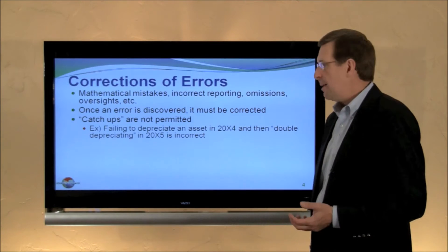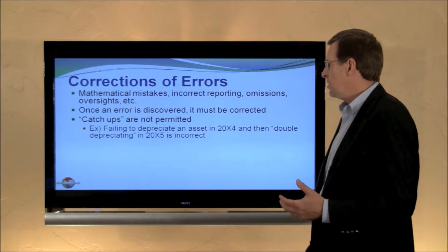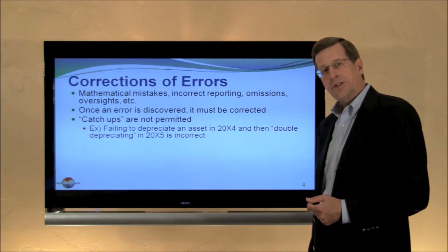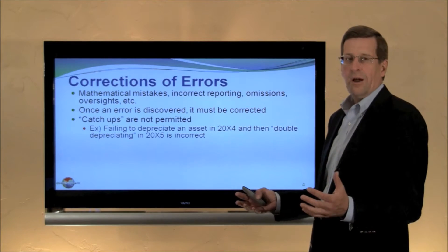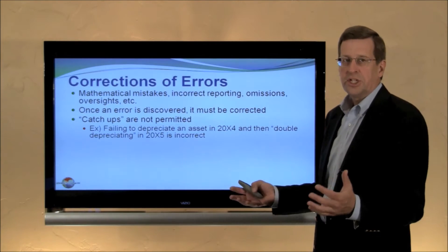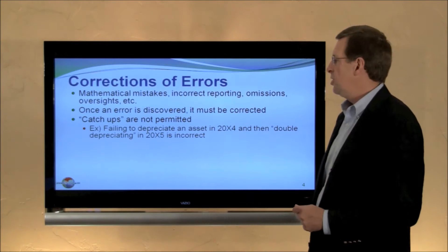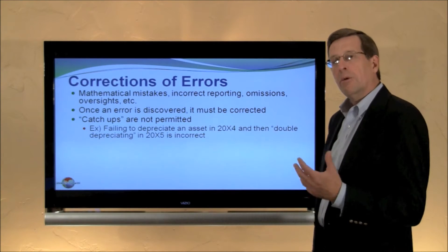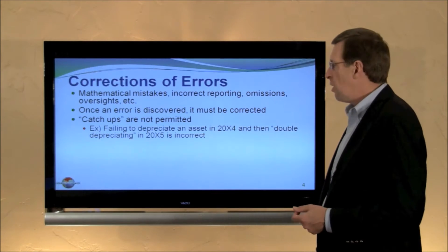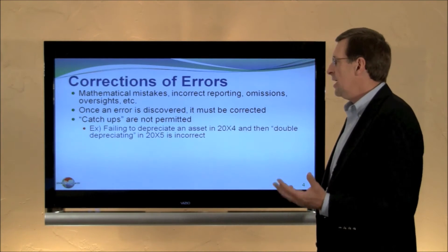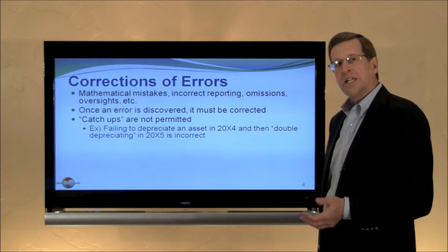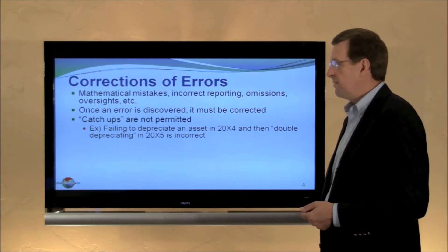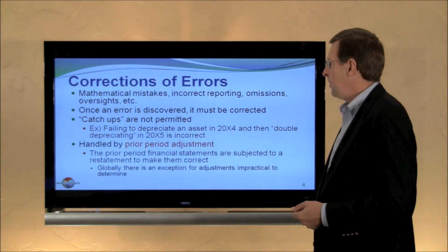Catch-ups are not permitted. In other words, if we failed to record depreciation in 20x4, we can't just double-count in 20x5 when we're back on track — both years would be wrong in that case. In the truest sense of the word, we should go back and correct the financial statements of the prior period.